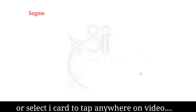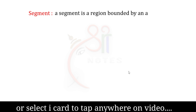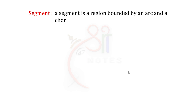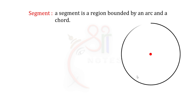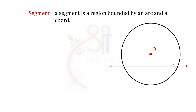First of all, a segment is a region bounded by an arc and a chord. A circle is drawn based on a center point and radius. In this circle, we will draw a chord. A chord intersects the circle in two places.